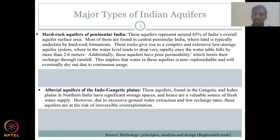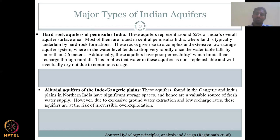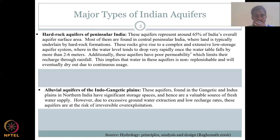The second major type of Indian aquifer is the alluvial aquifer on the Indo-Gangetic Plains. These aquifers found in the Ganges and Indus Plains in northern India have significant storage space because every year there are sedimentations — the sediment layer thickens, water gets stored, and hence it is a valuable source of freshwater supply. However, due to excessive groundwater extraction and low recharge rates, these aquifers are at risk of irreversible overexploitation.